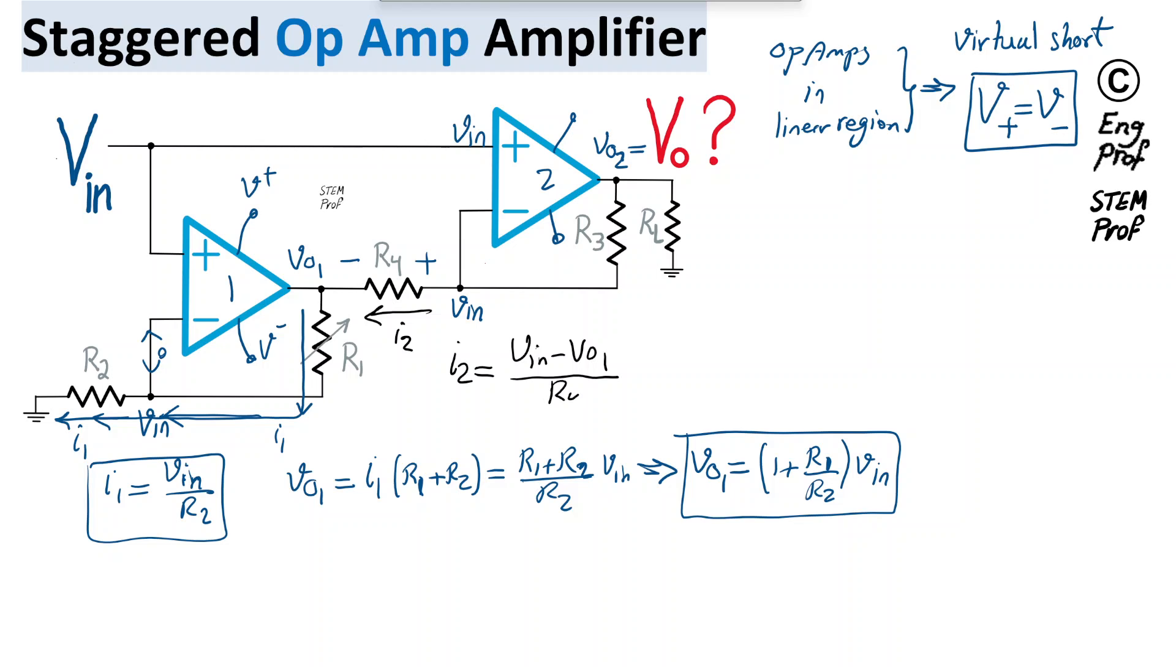Now, I am going to substitute for Vout 1 from equation 1 that we just found. So V-in minus, I'm going to substitute this value for Vout 1, so it becomes 1 plus R1 over R2 times V-in, and then divide by R4.